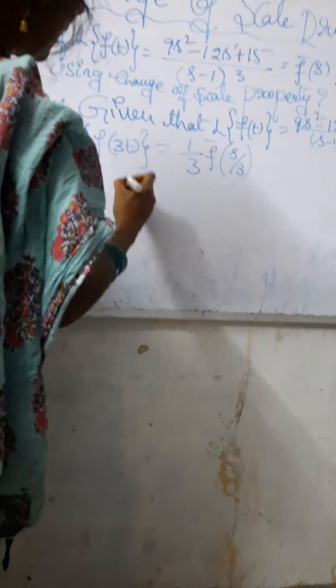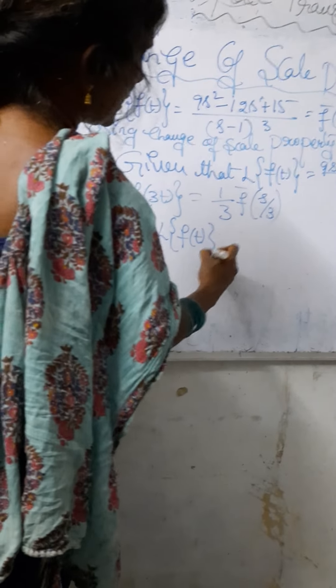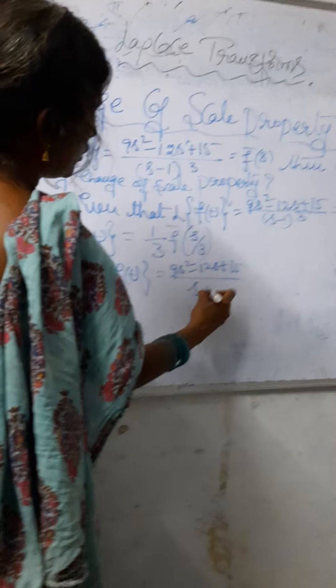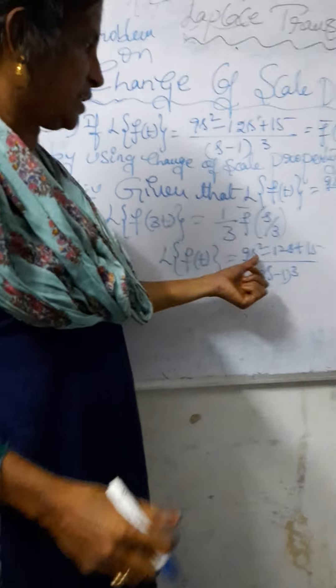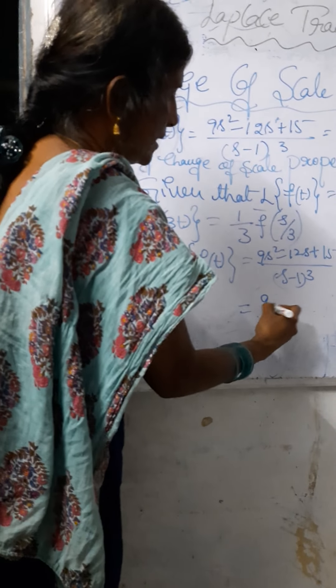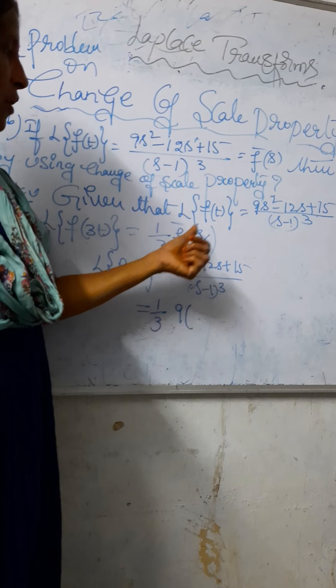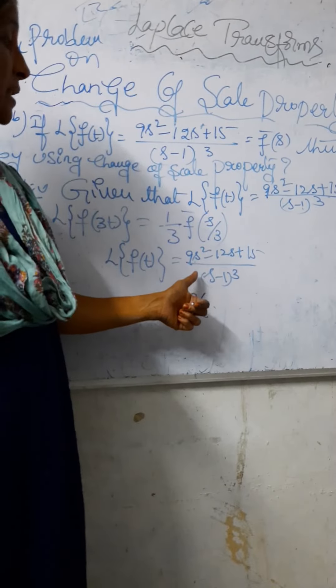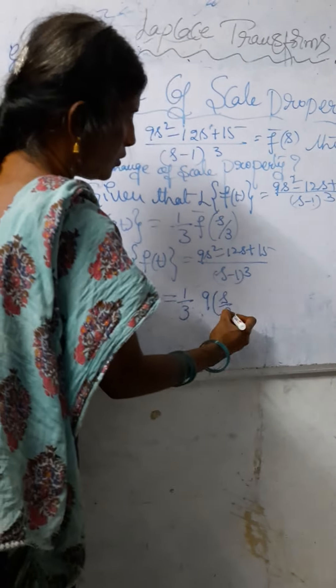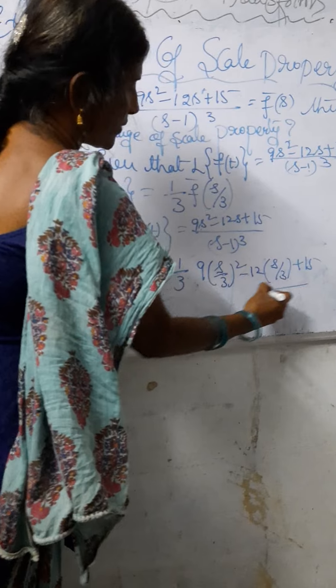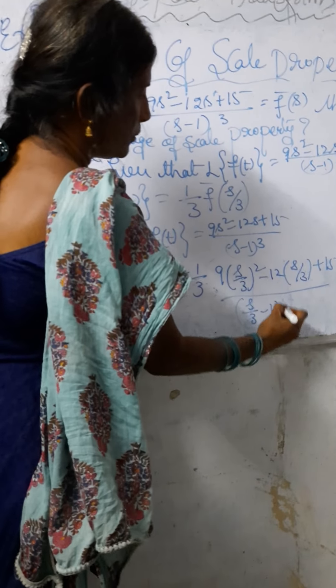Now, taking the Laplace transform of f(t) = (9s² - 12s + 15) / (s - 1)³, we substitute s/3 in place of s. That gives us (1/3) f̄(s/3), meaning we substitute s/3 into the expression: 9(s/3)² - 12(s/3) + 15, divided by (s/3 - 1)³.